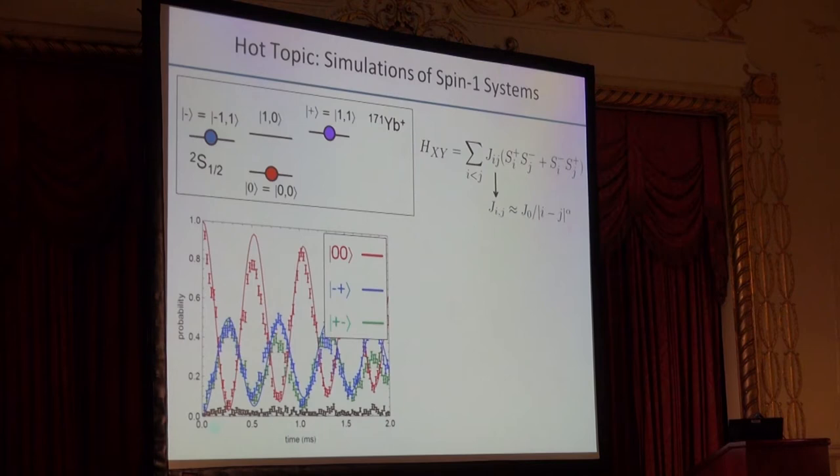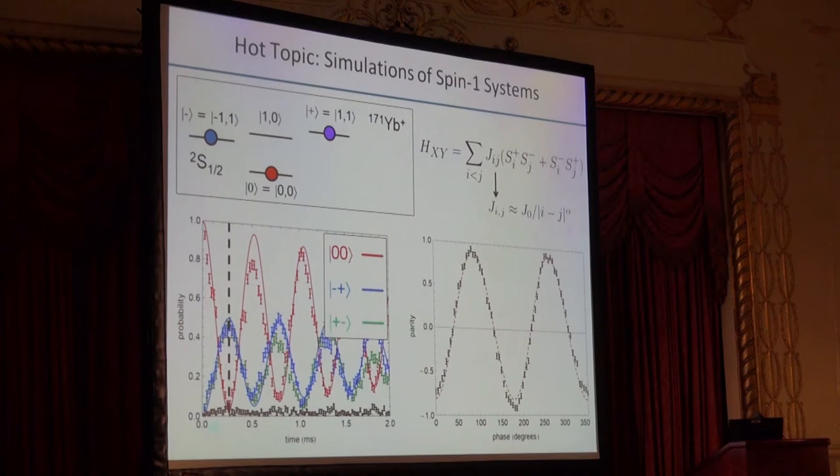How do I know that it's a coherent superposition? We can go to this time in the time evolution and perform a parity measurement on the minus, plus and plus, minus states. The excellent contrast that we see in this parity measurement certifies that we have an entangled state at that point with an entanglement fidelity of 86%.